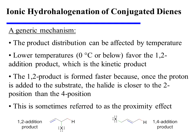In other words, the 1,2 product is formed faster because once the proton is added to the substrate, the halide is naturally closer to the 2 position than it is to the 4 position. This is sometimes referred to as the proximity effect.